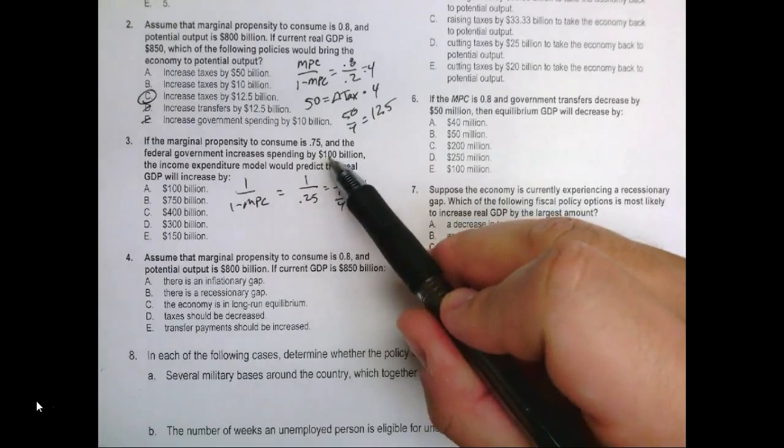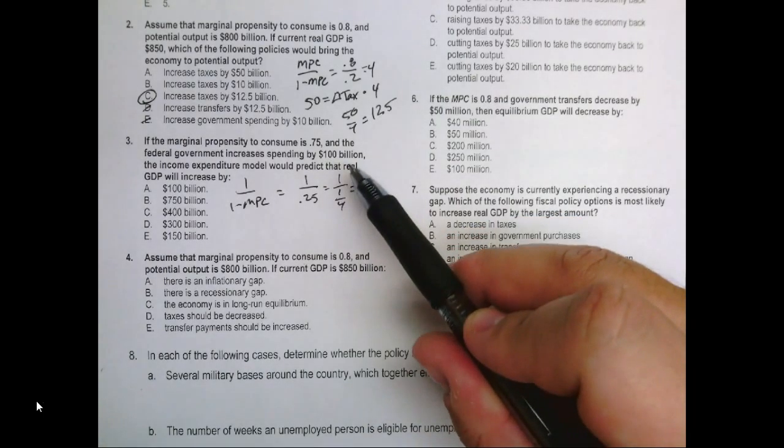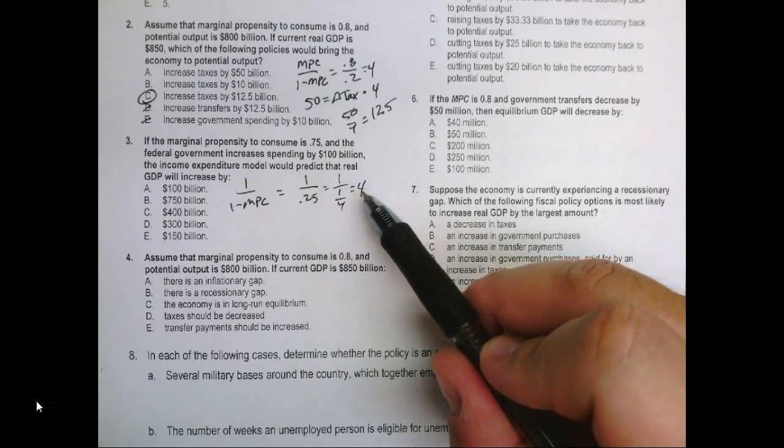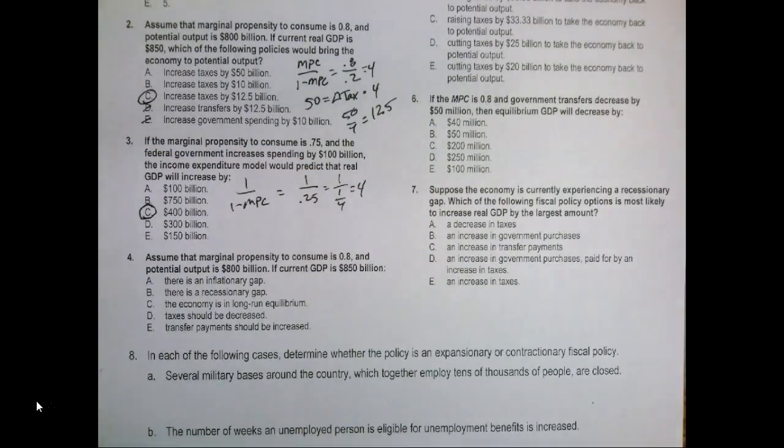So if the government is going to increase spending by $100 billion and there's a multiplier of 4, then we do that $100 billion times the multiplier, and we find that an increase of $100 billion leads to a total increase of $400 billion in GDP. So the answer there is C.